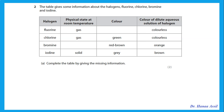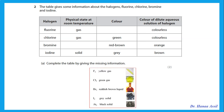Question 2: the table gives some information about halogens and we are required to complete the table. You should know the color and state of the halogens. Fluorine is a yellow gas. Chlorine is a green gas. Bromine is a red-brown liquid — remember bromine is the only liquid non-metal. And iodine is a gray solid.